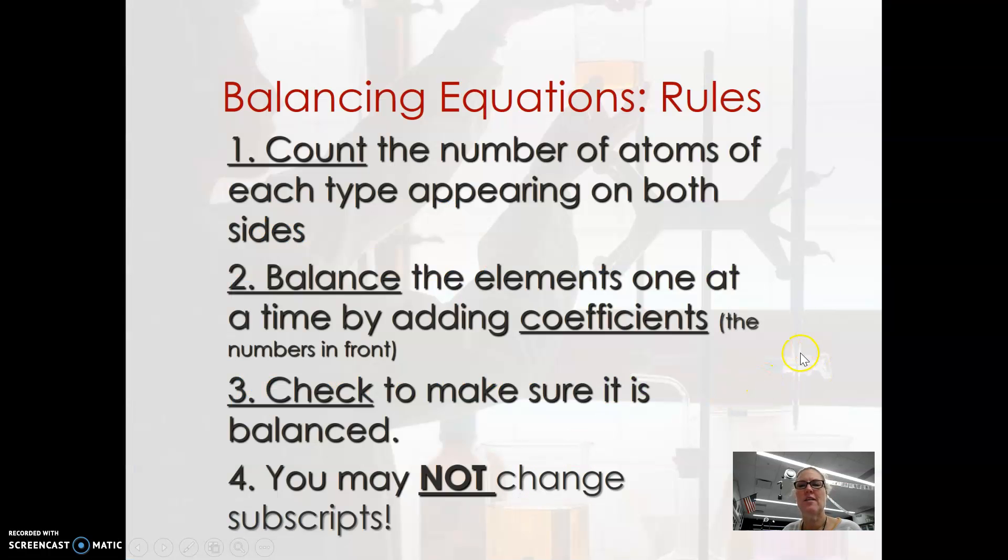And that's what balancing is all about. So basically we count the number of atoms, and what we're allowed to do is not change any subscripts—the numbers at the bottom—but we are allowed to only change coefficients. Okay, that's the key.